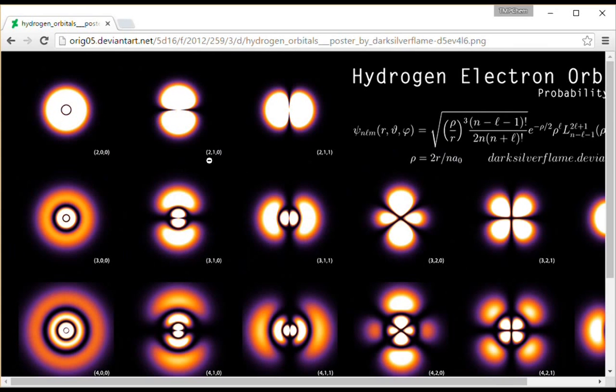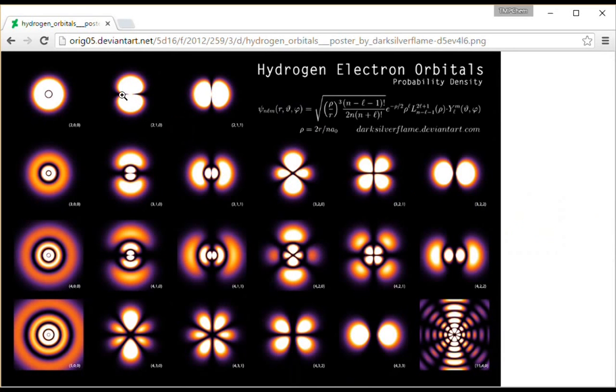2, 1, 0 is 2PZ, one angular node. 2PX and 2PY have one angular node. We have 3P here, one radial node, one angular node, and other 3P orbitals.